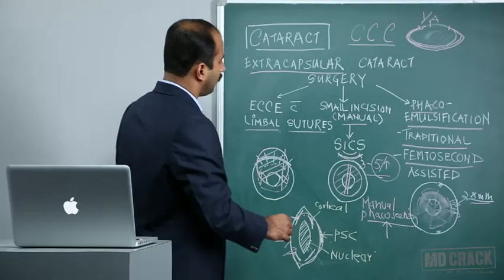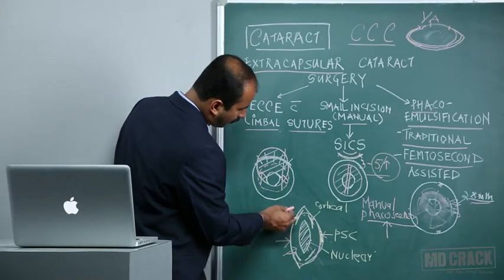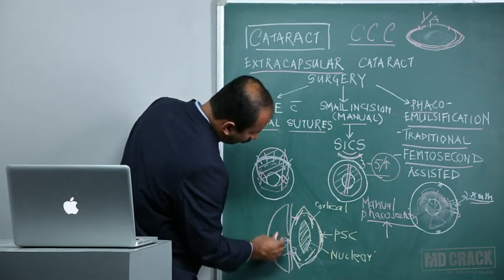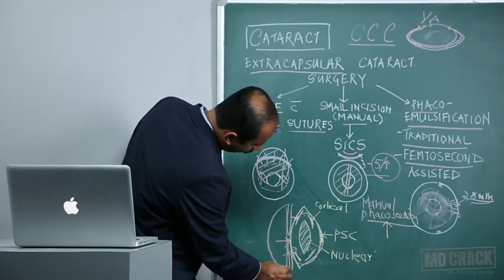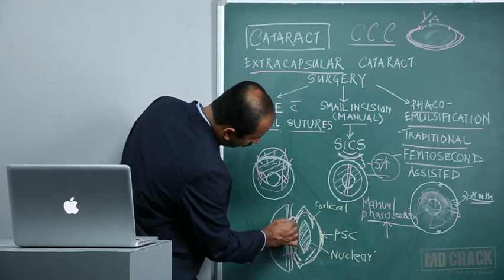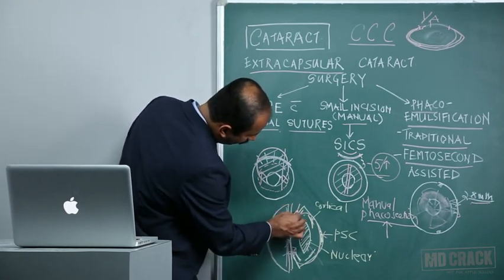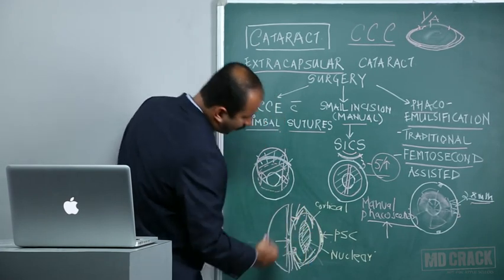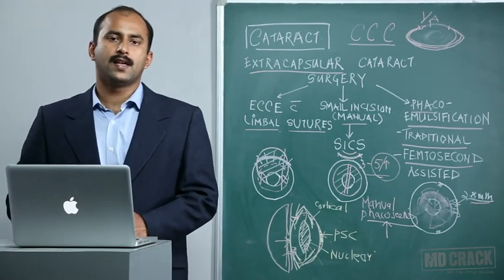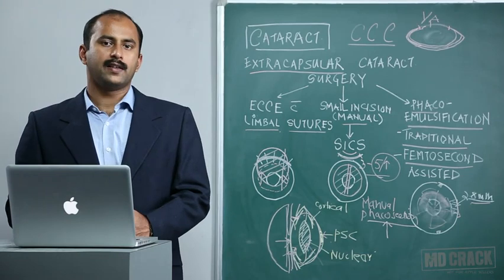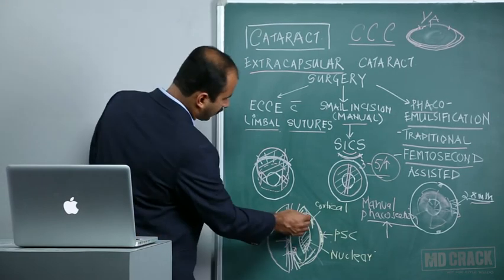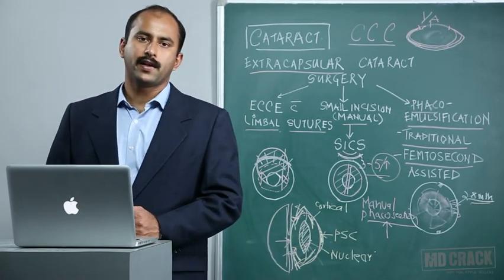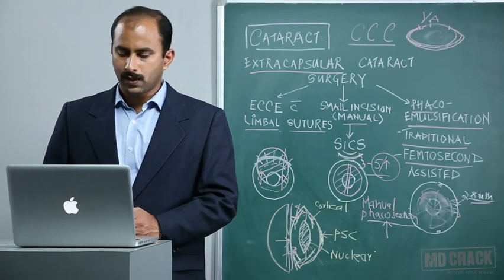In terms of site of implantation, an IOL can be placed in the anterior chamber, clipped to the iris, placed in the posterior chamber, or implanted in the capsular bag. The basic advantage of in-the-bag implantation is that it is as near the nodal point as possible, is the most physiological position, and no part of the lens touches any uveal tissue — hence it induces the least reaction and fewest problems after cataract surgery.